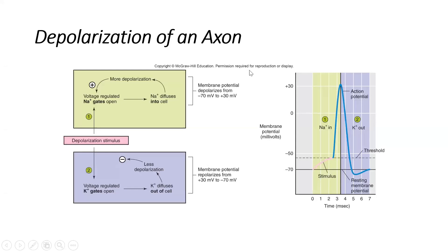We're describing the features of the action potential and how it's really dependent upon two channels - the events and activities happening at the voltage-gated sodium channels and the potassium channels as well. The action potential is really an example of negative feedback as far as the movement of sodium, and negative feedback as far as the movement of potassium.